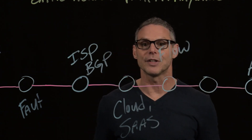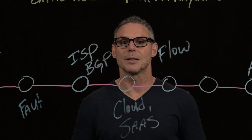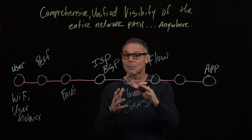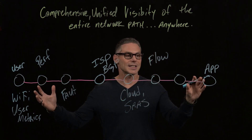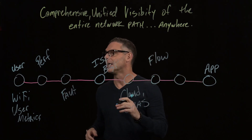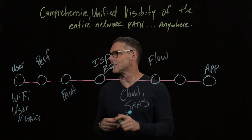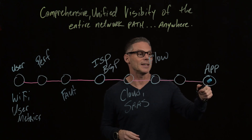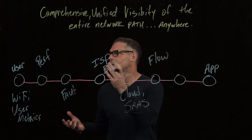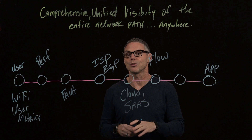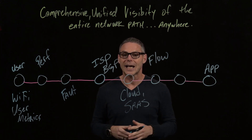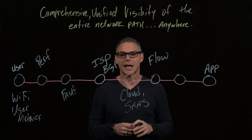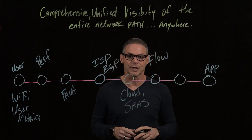Network operations teams rely on network flow data — the ability to understand what applications are actually consuming bandwidth along the entire network path. For our insurance example, the agent is using a claims app in a SaaS environment, but it could also be Netflix or YouTube consuming bandwidth. What is the culprit application and how is it behaving along this entire network path? This flow data is very important to collect.